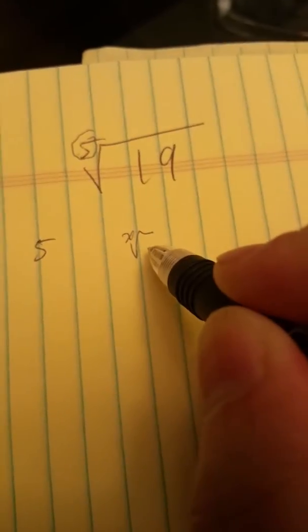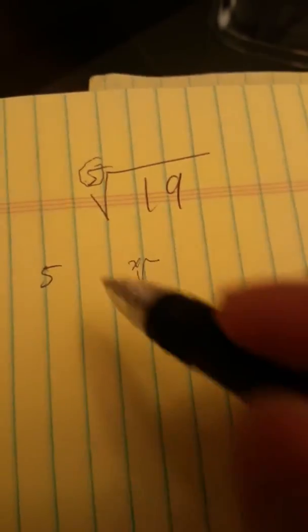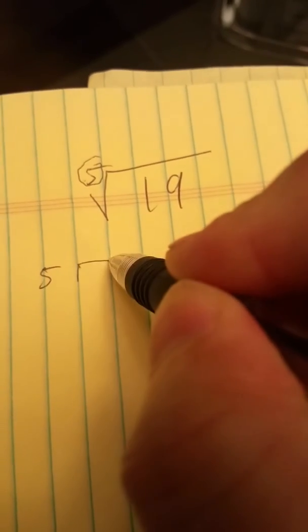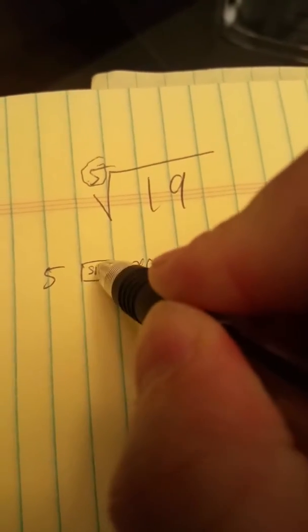So you do the number five and then you do the x root symbol. But because the x root, again, because it's above the key, you need to hit shift. And then 19.